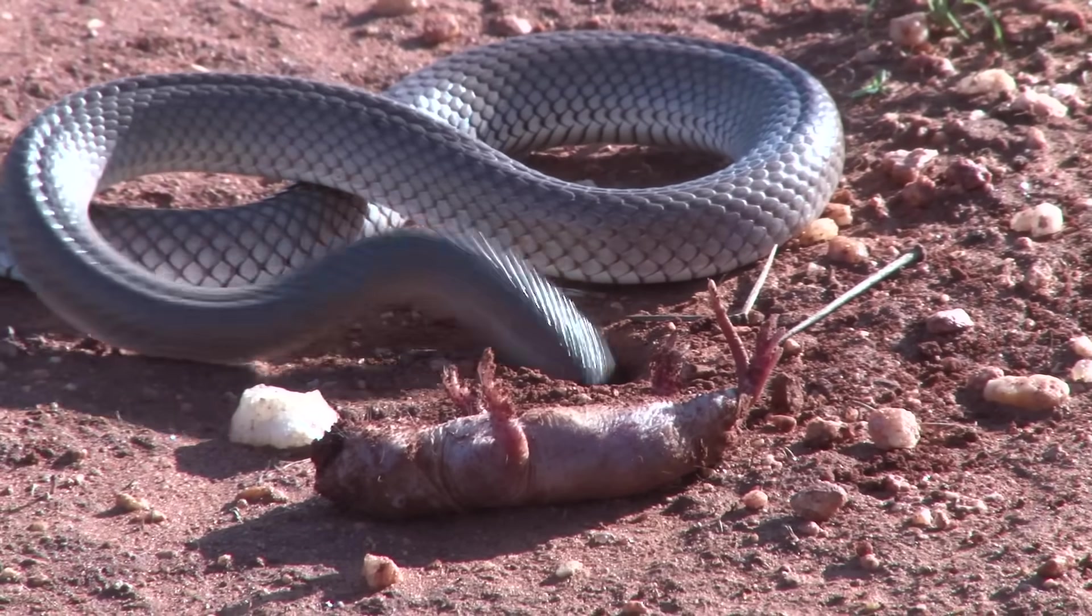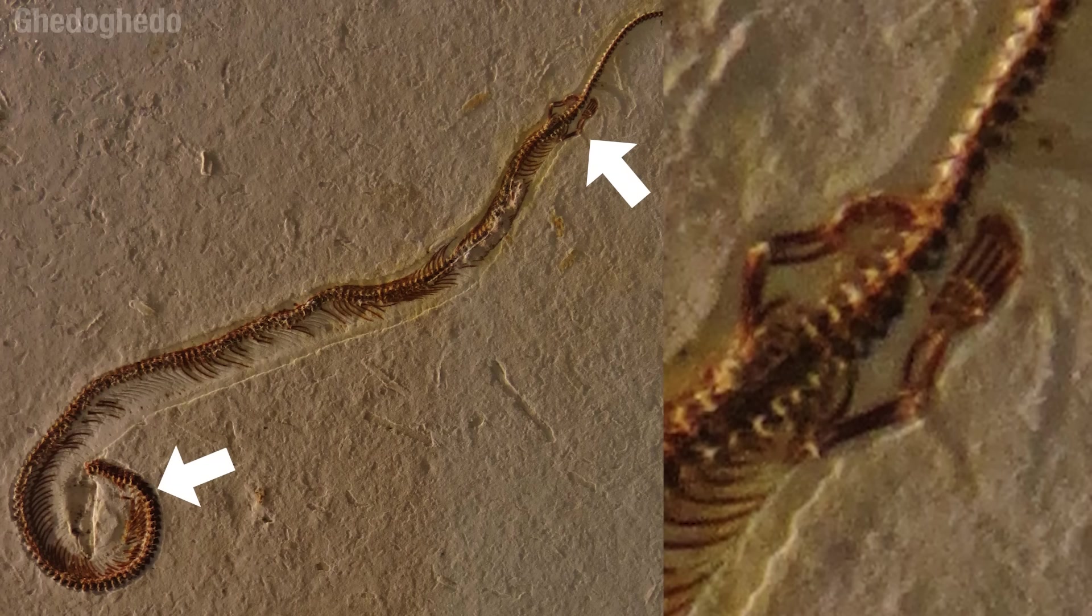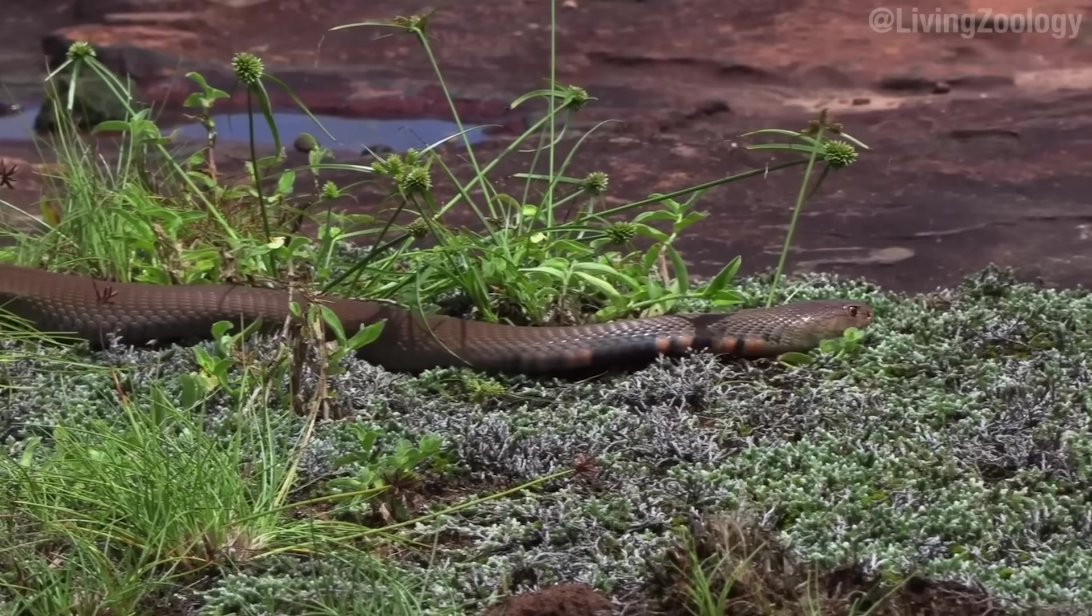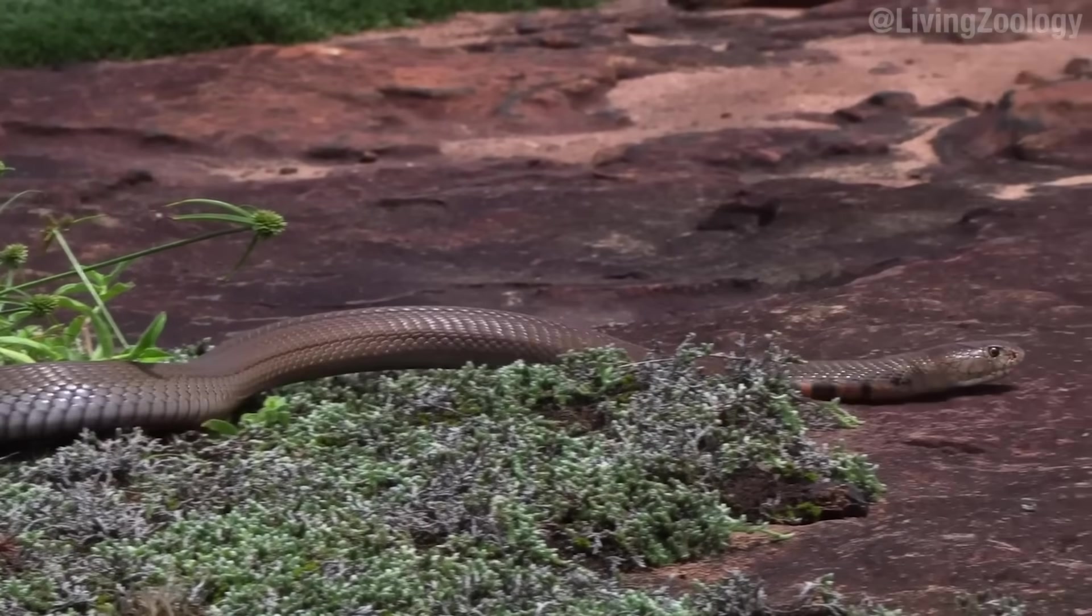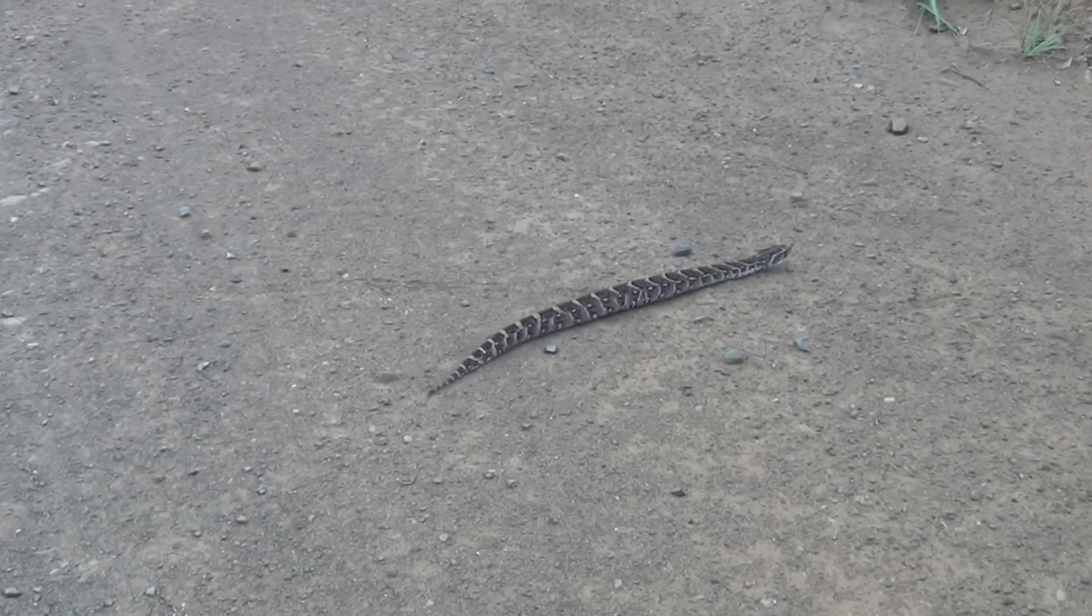The lizard-like ancestors of snakes benefited from getting longer for some reason. One idea is that they started to hunt down holes. But whatever that reason was, they held onto their limbs for quite some time. You know, this one took a long pause in that song, Head, Shoulders, Knees, and Toes. Now, eventually, those limbs disappeared altogether. But if there was some disadvantage to that, no one told the snakes, because they'd already figured out how to get around.